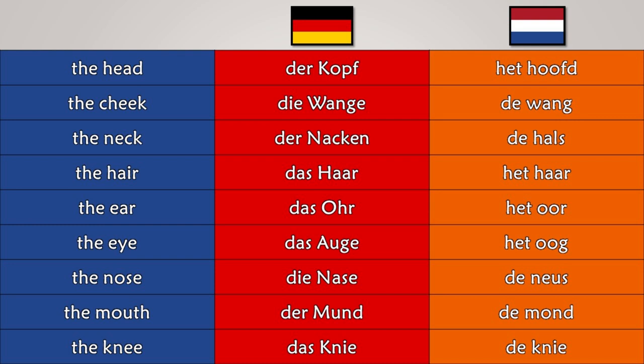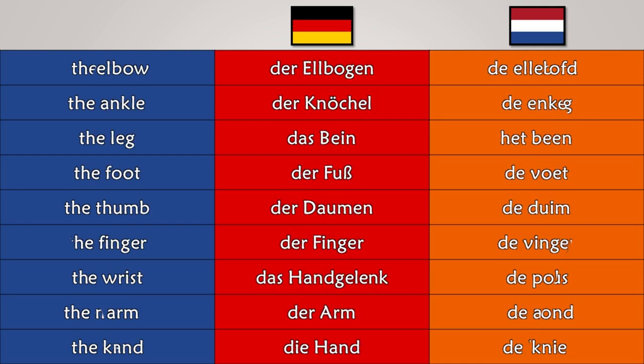Body parts: Der Kopf! Het hoofd! Die Wange! De wang! Der Nacken! De hals! Das Haar! Het haar! Das Ohr! Het oor! Das Auge! Het oog! Die Nase! De neus! Der Mund! De mond! Das Knie! De knie! Der Ellbogen! De elleboog! Der Knöchel! De enkel! Das Bein! Het been! Der Fuß! De voet! Der Daumen! De duim! Der Finger! De vinger! Das Handgelenk! De pols! Der Arm! De arm! Die Hand! De hand!